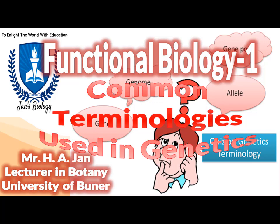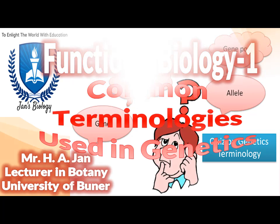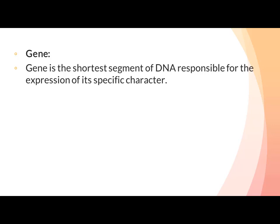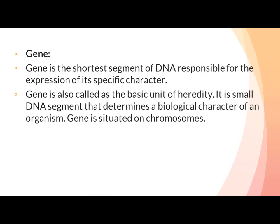Dear students, welcome to the online lecture room. In this video lecture, we will discuss common terminologies used in genetics. Gene is the shortest segment of DNA responsible for the expression of its specific character. Gene is also called the basic unit of heredity. It is a small DNA segment that determines a biological character of an organism. Gene is situated on chromosome.